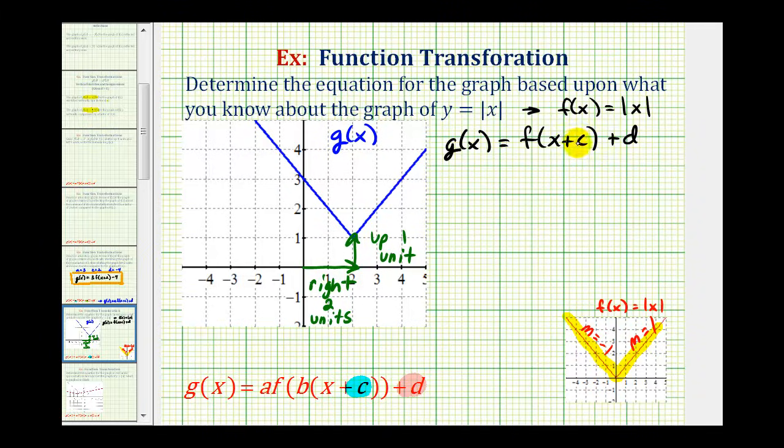Let's first consider the value of c. If c is positive, or we have x plus a constant, the graph will be shifted left c units, but our graph has been shifted right c units. So when c is negative, or we have the quantity x minus c, the graph is shifted c units right. So in our case, c is equal to negative two.